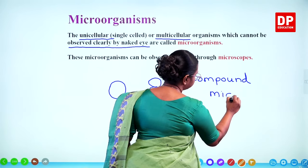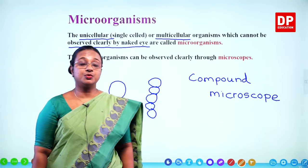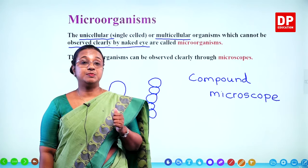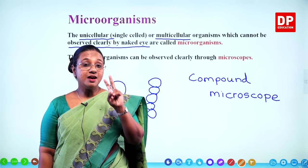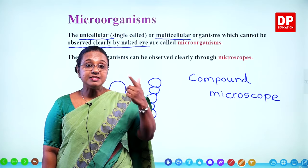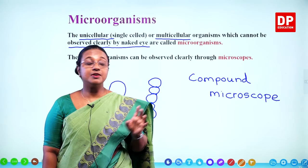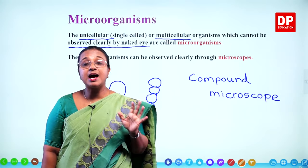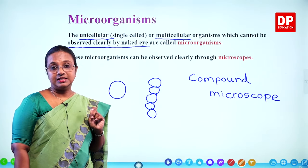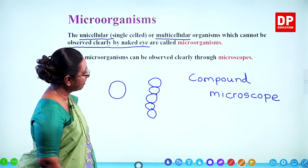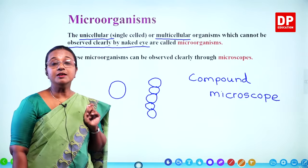The compound microscope has two lenses — the eyepiece and the objective — which gives it a high magnifying power. Because of that, you can observe all these microorganisms clearly. The magnifying power is high, and that is the reason we need a microscope to observe the microorganisms.